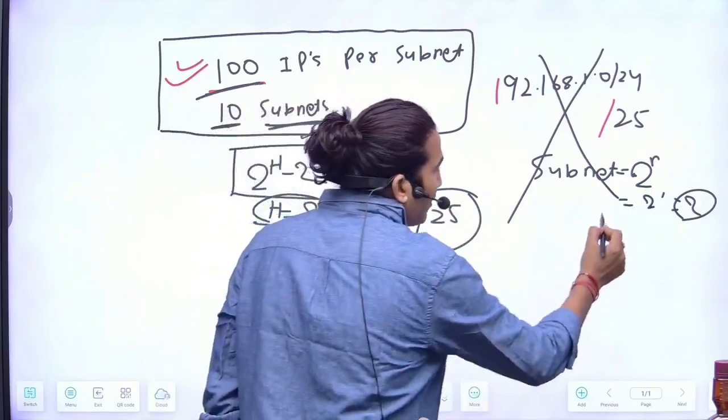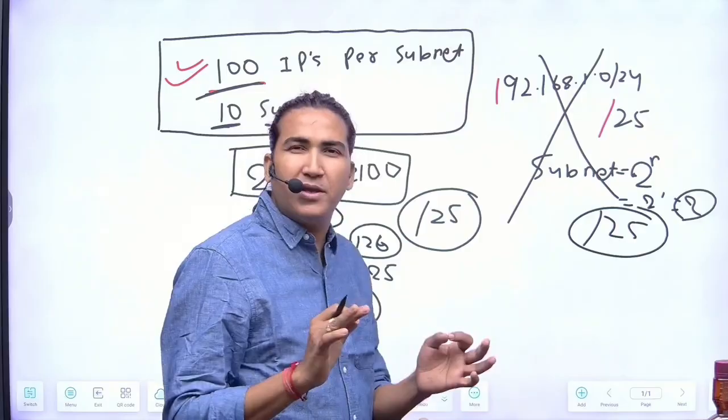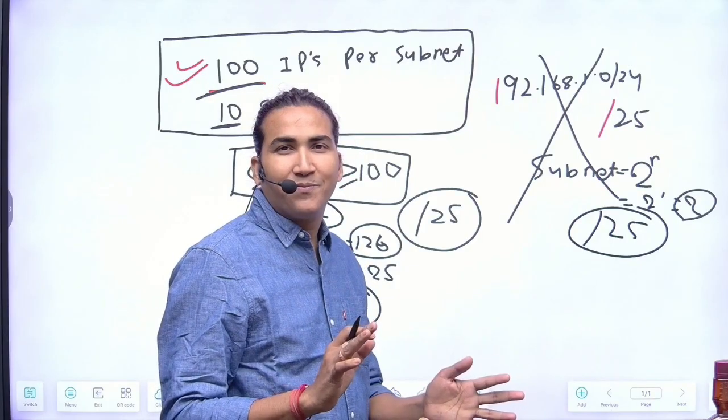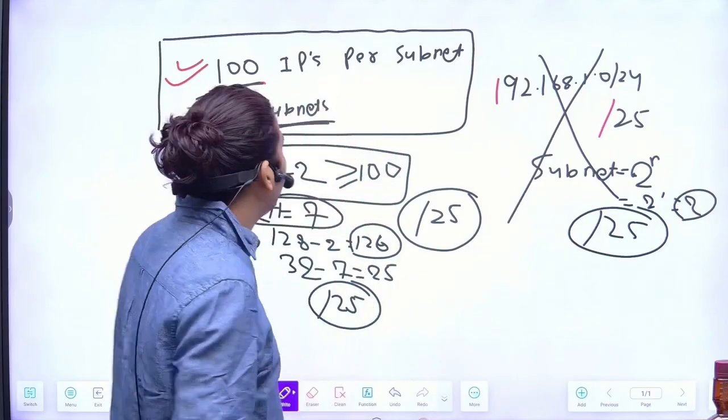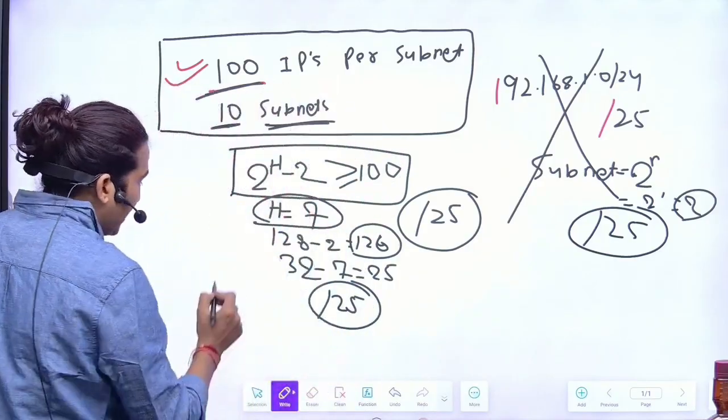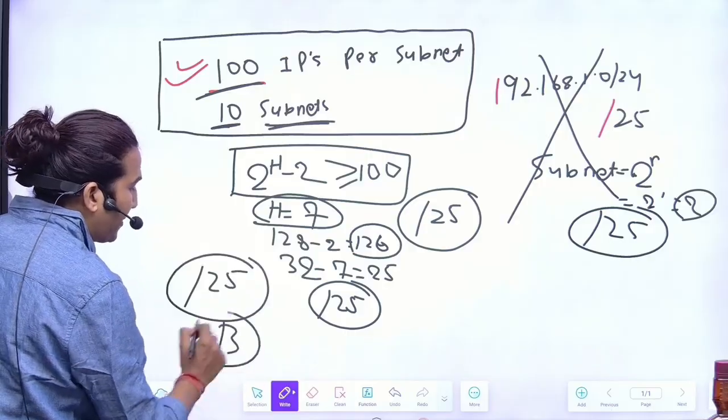Again, slash value is going to be the same, 25 only. I need - CIDR value should be 25 only. But can I use IP from Class C? No. You have to use IP from Class B. So the correct answer of this question is slash 25 should be your CIDR value and you should use IP from Class B.